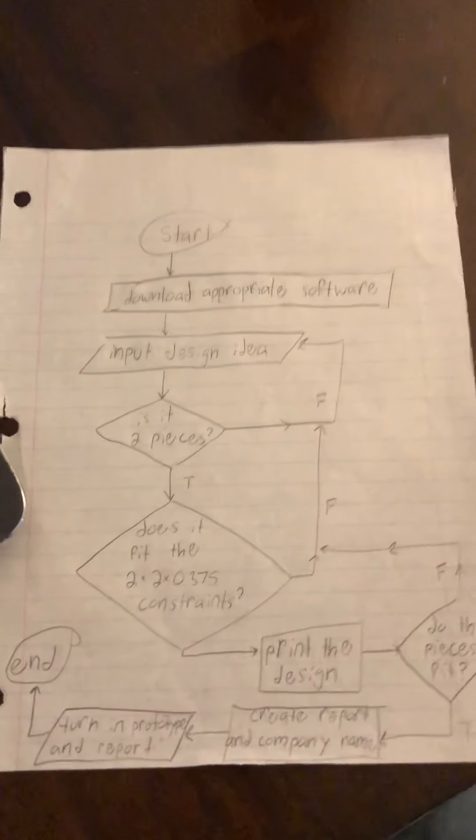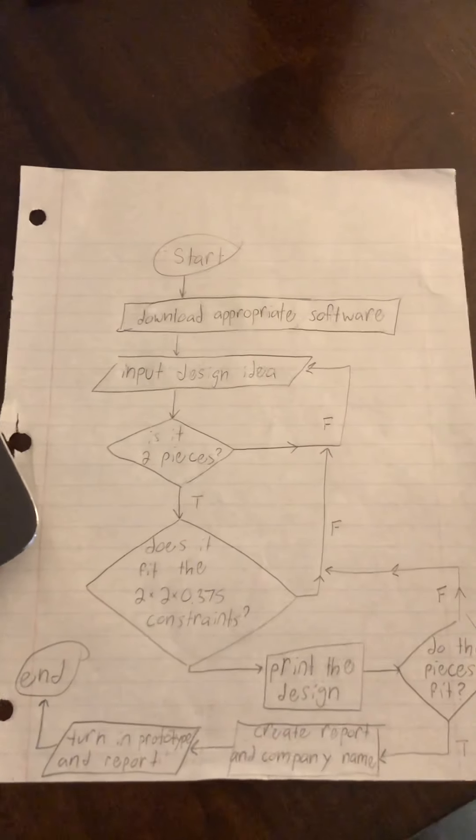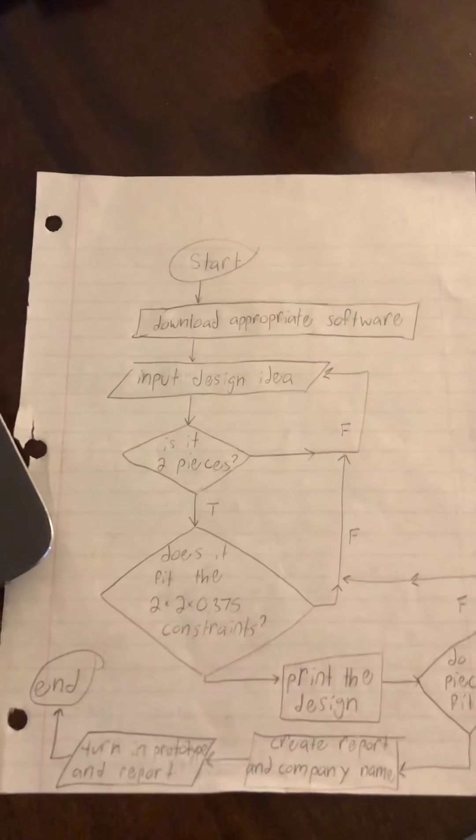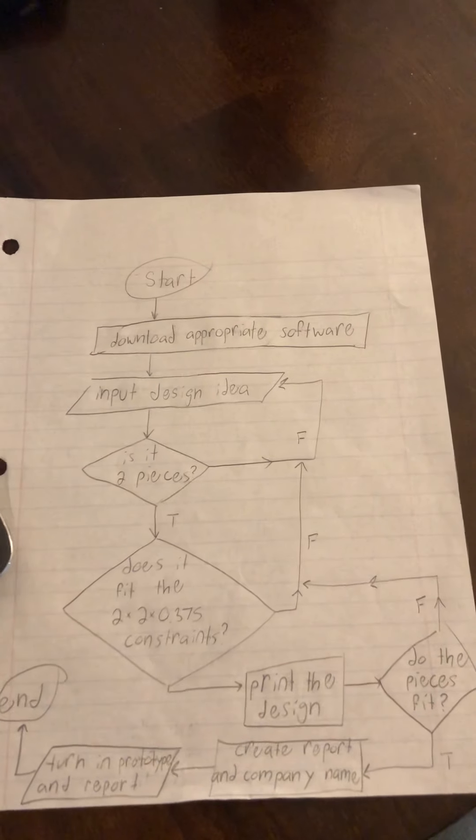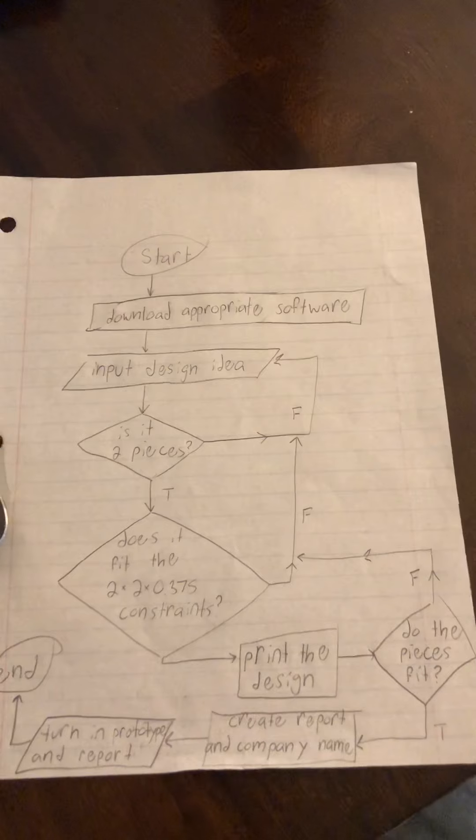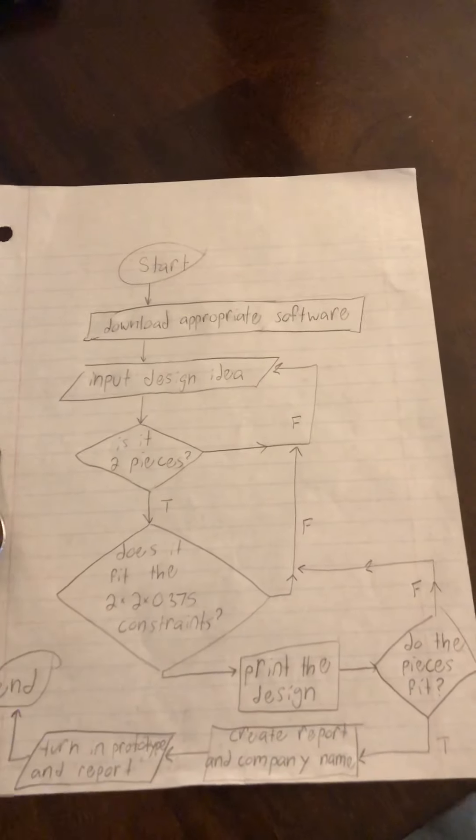But if it is two pieces, you have to ask yourself, do these two pieces fit the parameters, the constraints? Which is two inches by two inches by 0.375 inches. And if it does, you can print the design, and if not, you go back to the drawing board.